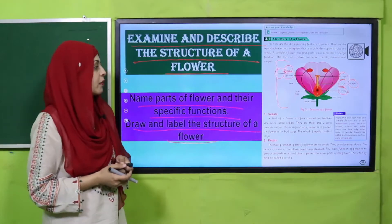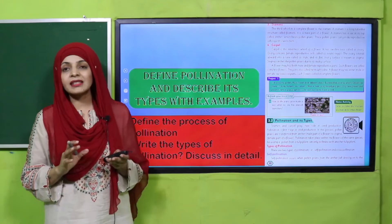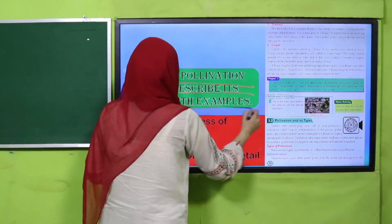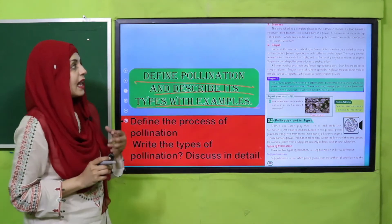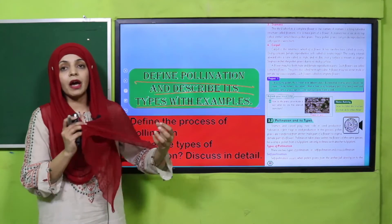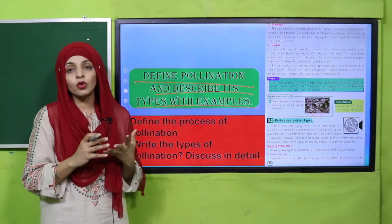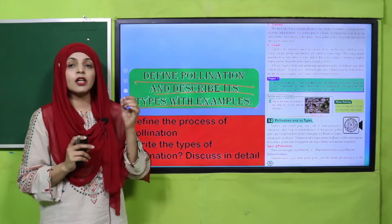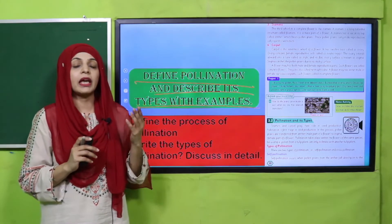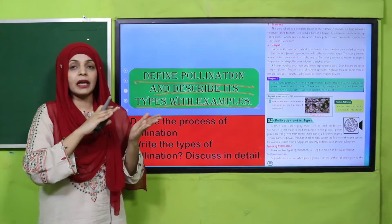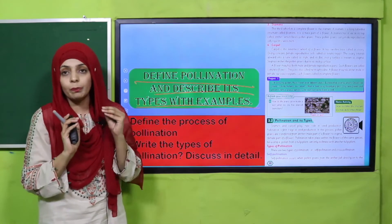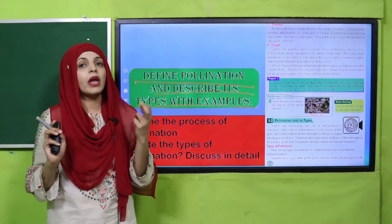Very good. Now we will move forward. In the next lecture, students defined pollination and described its types with examples. Humne different tarah ki pollination ke baare mein padha tha — kaun kaun se flower structures pollination mein involved hote hain. Humne dekha ke anthers mein very small powdery form mein pollens hote hain, aur jab wo transfer ho jaate hain from the anther to the stigma of the female part carpel, that is called pollination.